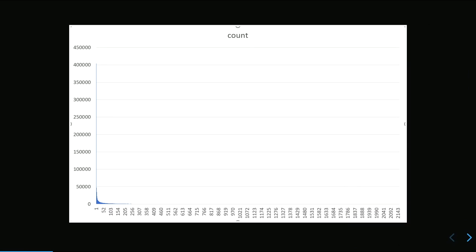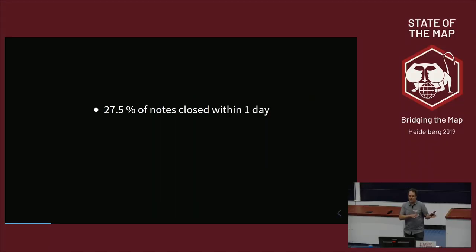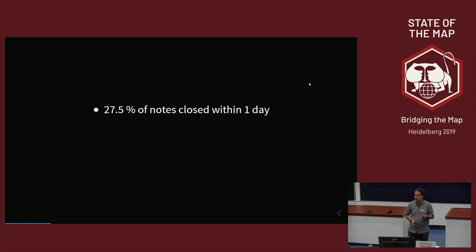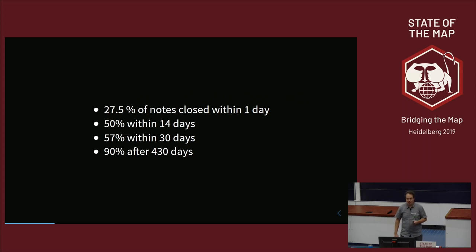I tried to draw a graph of how quickly notes were closed. The x-axis is time to close a note, the y-axis is the number of notes. There are a lot of notes closed right at the beginning, then a very long tail. Of all closed notes, 27.5% are closed within one day — higher than I'd have expected — 50% within 14 days, and 57% within 30 days. Unfortunately, to get to 90% of notes closed takes 430 days.